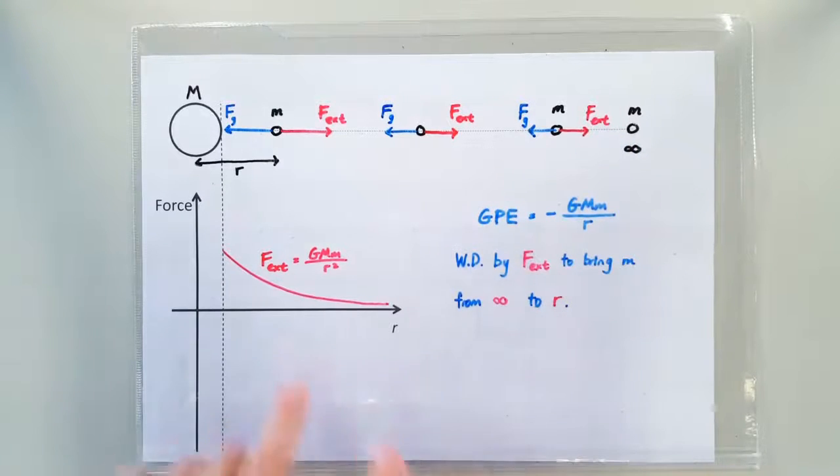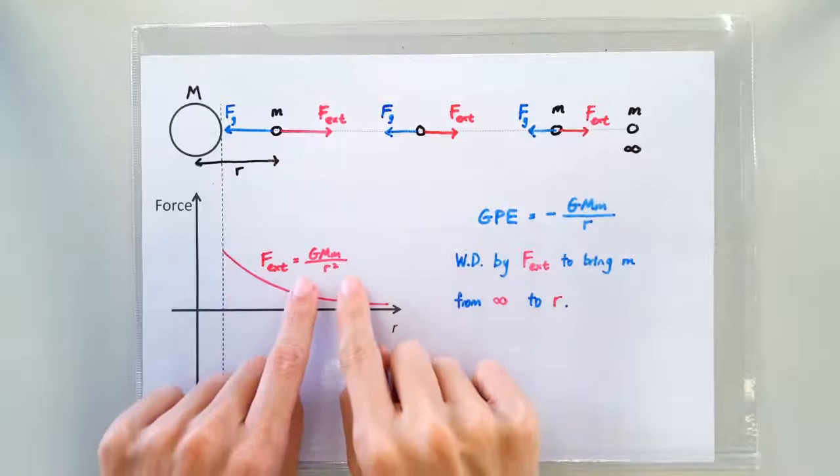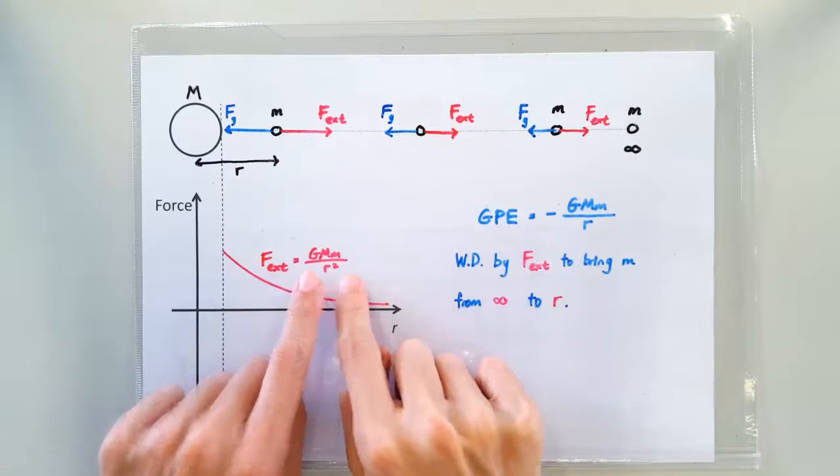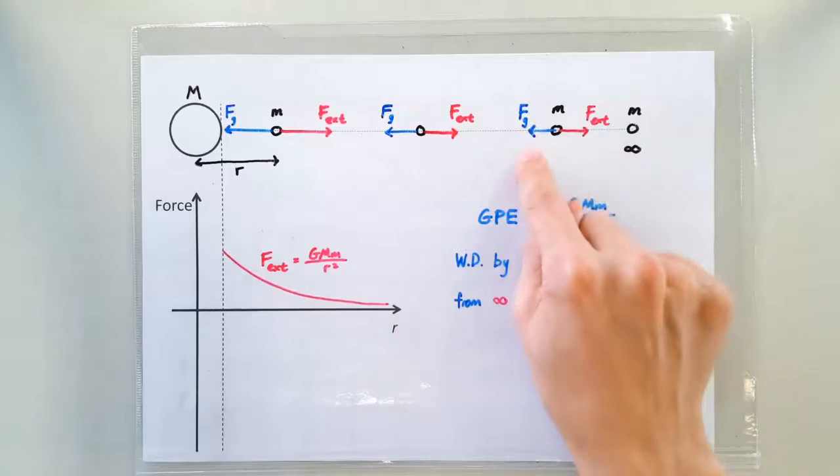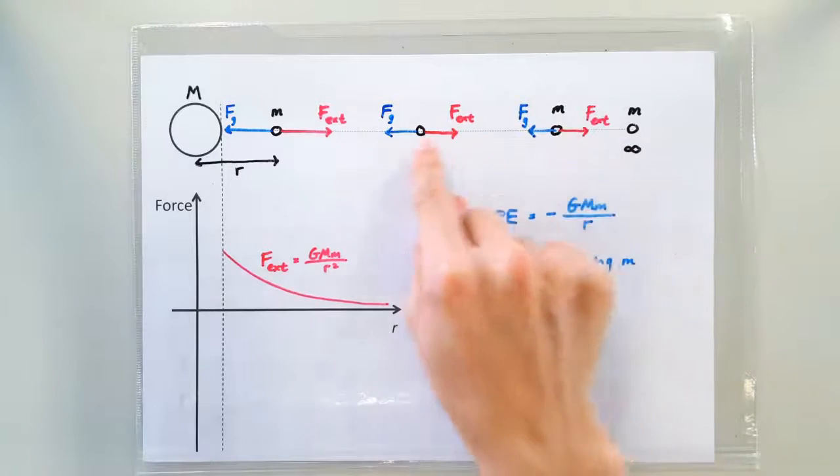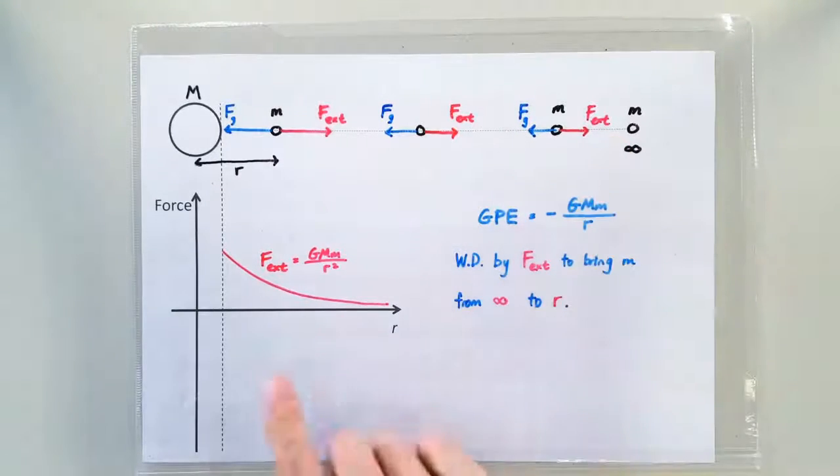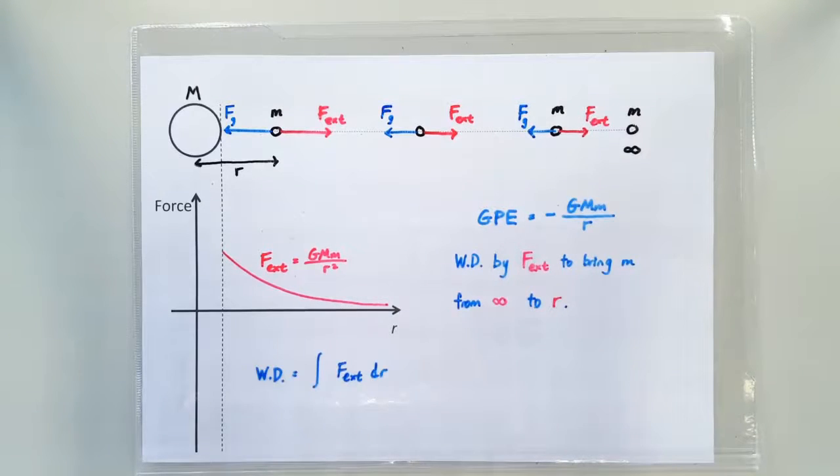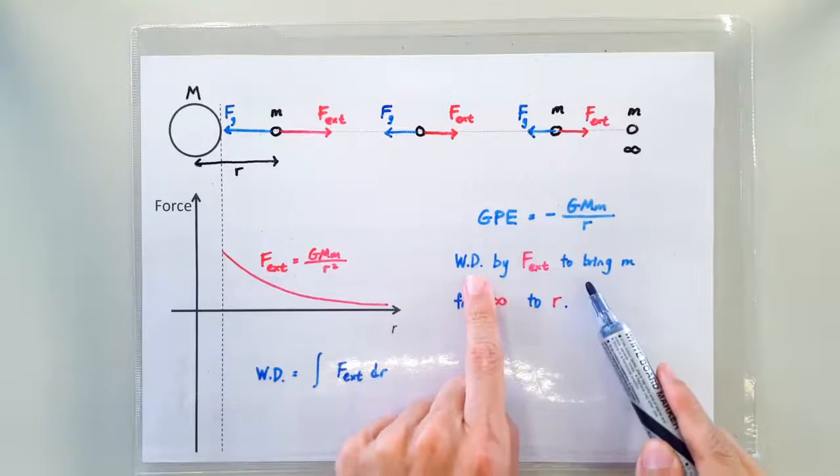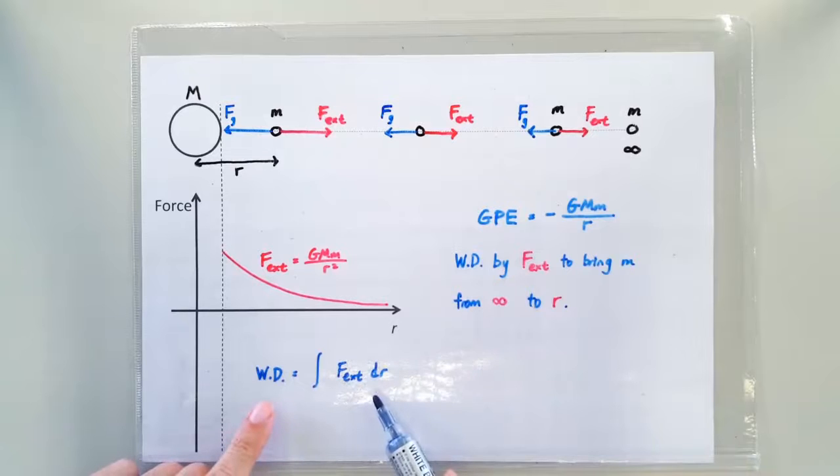That's easy because we know that the gravitational force follows exactly GMM over R squared. So the external force must match the gravitational force at every position. So the external force at every position is also GMM over R squared. Now let's translate this English sentence into a mathematical expression.